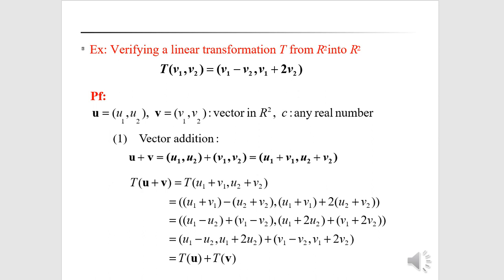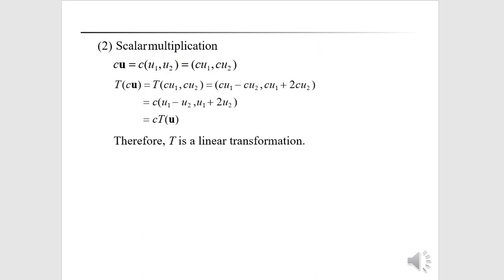Verifying the linear transformation T from R² into R²: T(v₁, v₂) = (v₁ − v₂, v₁ + 2v₂). For vector addition, we take u = (u₁, u₂) and v = (v₁, v₂), so u + v = (u₁ + v₁, u₂ + v₂). We compute T(u + v) = T(u₁ + v₁, u₂ + v₂), applying the definition to get T(u₁ + v₁ − (u₂ + v₂), ...), and we obtain T(u) + T(v).